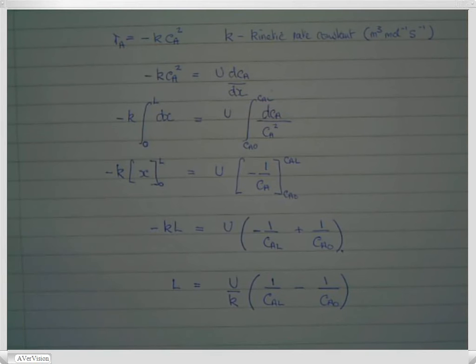So that gives you the length is equal to the velocity divided by the rate constant, multiplied by the difference of the reciprocals of the concentration, the inlet and the outlet. And that's very similar to the batch reactor case, which is expressed in terms of time rather than distance.